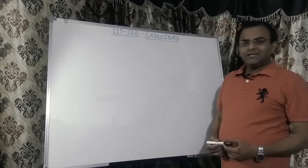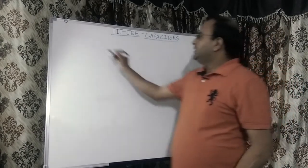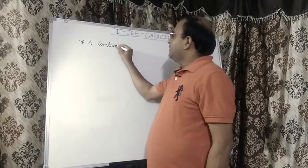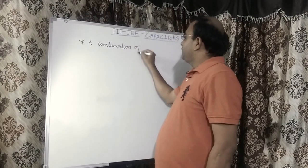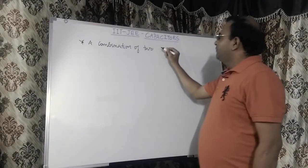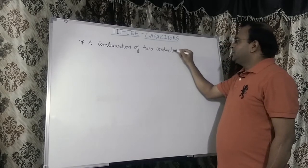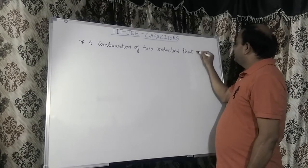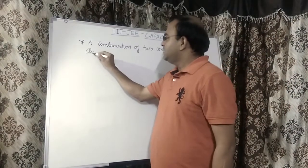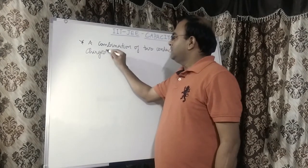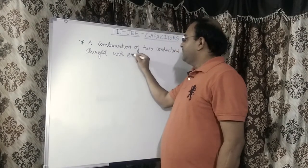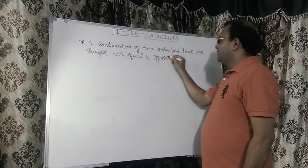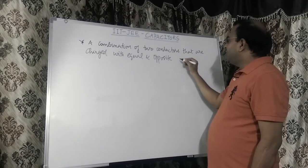What is a capacitor? A capacitor is nothing but a combination of two conductors that are charged with equal and opposite charges. That is, if one of the conductors has a charge plus Q, the other one should be charged with a charge of minus Q.